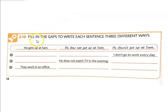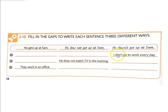Lesson 2.10: Fill in the gaps to write each sentence three different ways. So 1, 2, and 3, but you're going to be writing three different sentences for each number.